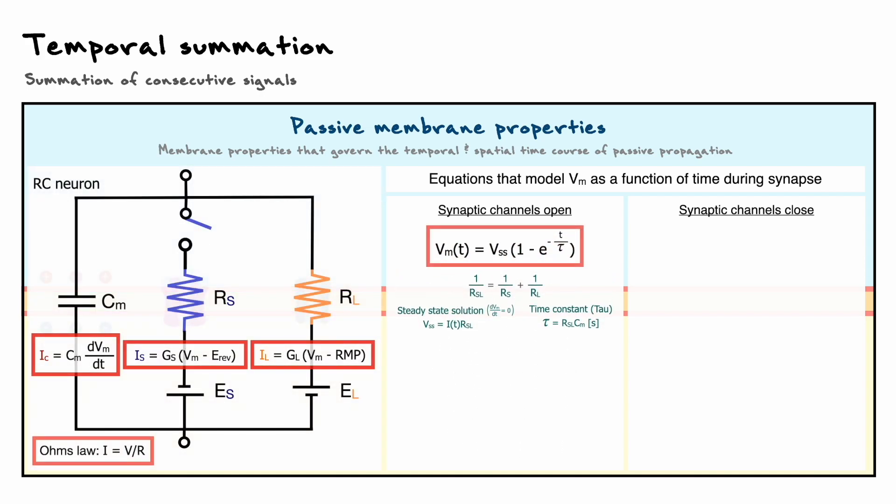Now, when the synapse is closed and the membrane potential returns to baseline, the conditions change. First, the current as a function of time now equals zero because the currents are only mediated by the capacitor and the resting resistors which pass current to return to the resting state, but there is no additional source of current now.